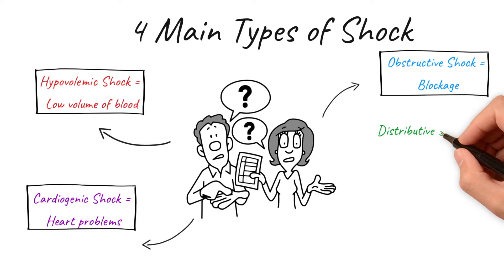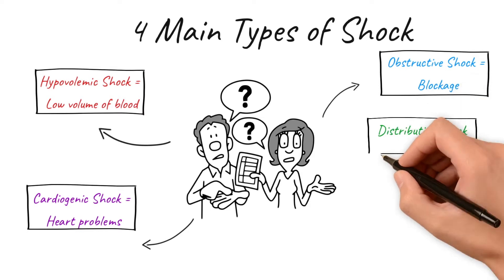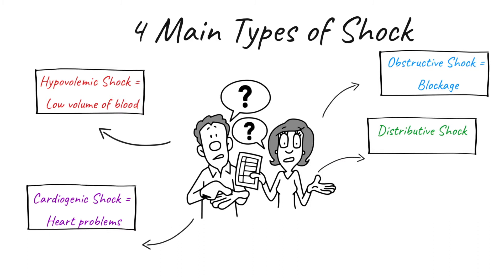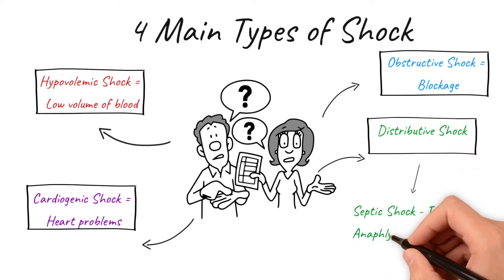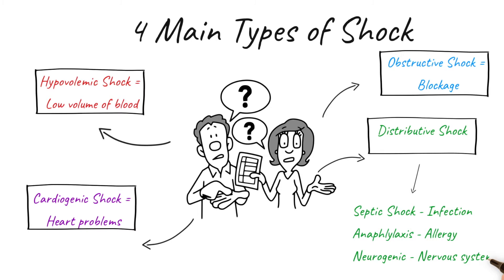Then we have distributive shock, which is normally caused by an abnormal disruption of blood to tissues and organs. It includes septic shock, anaphylactic shock, and neurogenic shock. Septic shock is caused by an overwhelming infection that cannot be cleared by the immune system. Anaphylactic shock is caused by a severe reaction to an allergen — anaphylaxis. Neurogenic shock arises due to damage to the central nervous system, which impairs cardiac function by reducing heart rate and loosening blood vessel tone, resulting in severe hypotension.